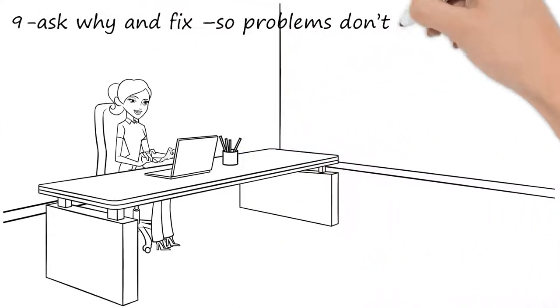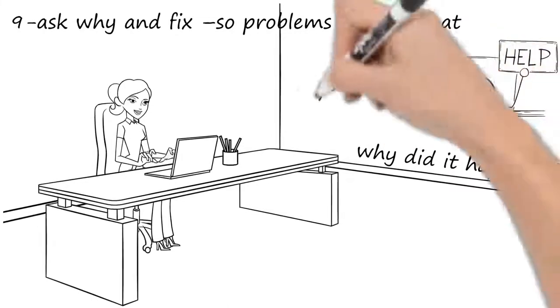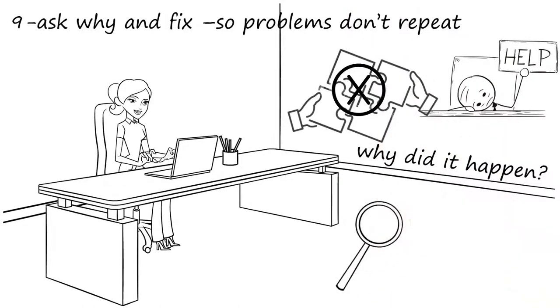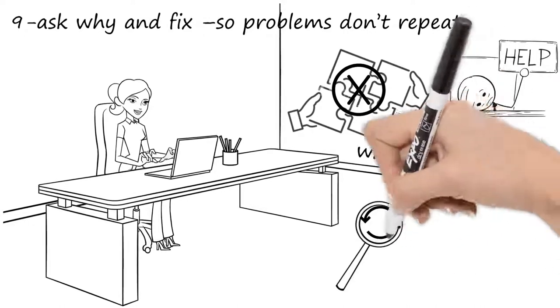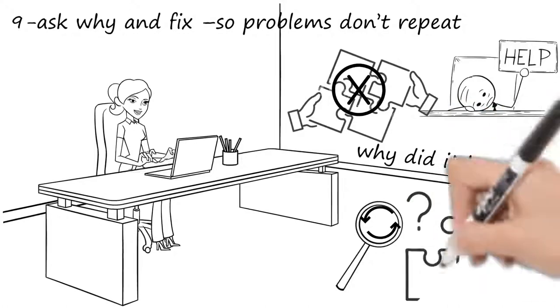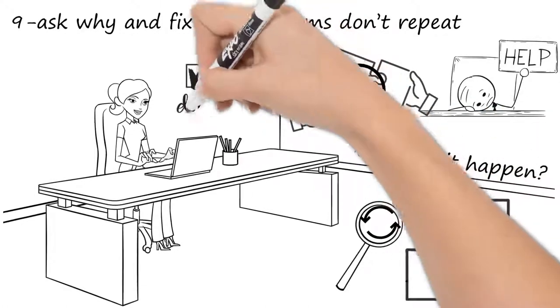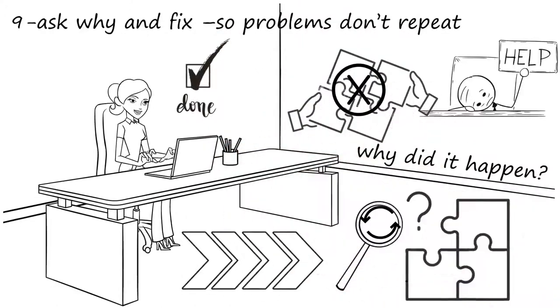Number nine out of ten is if there's a problem, rather than just fixing it, you should ask why did it happen and fix the root cause. Even if you have to ask why several times, you know, why did it go wrong, the information was wrong on the computer, well, why was the information wrong on the computer? Well, it's nobody's job to update it. Why is it nobody's job to update it? So you need to burrow down to get to the root cause and fix it. There's really no excuse for problems repeating, because they should be nailed after the first time they crop up.